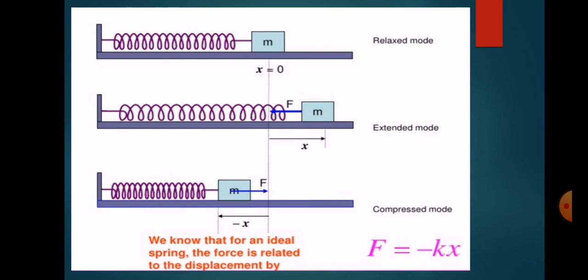When the body m is displaced toward the right from the equilibrium position, the force f exerted by the spring on the body is directed toward the left. See in figure number three — the compressed mode, where the body is displaced toward the left. When the body is displaced toward the left from the equilibrium position, the force f exerted by the spring is directed toward the right. In both cases, this force f is called the restoring force.